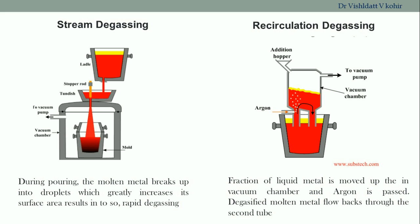In case of recirculation degassing, the molten metal is taken into the vacuum chamber and argon gas is passed through it. The recirculation of the molten metal creates more agitation, which helps in removal of the dissolved gases from the molten metal. In this way, vacuum degassing is an effective way of removal of dissolved gases from the molten metal in order to get defect-free castings.